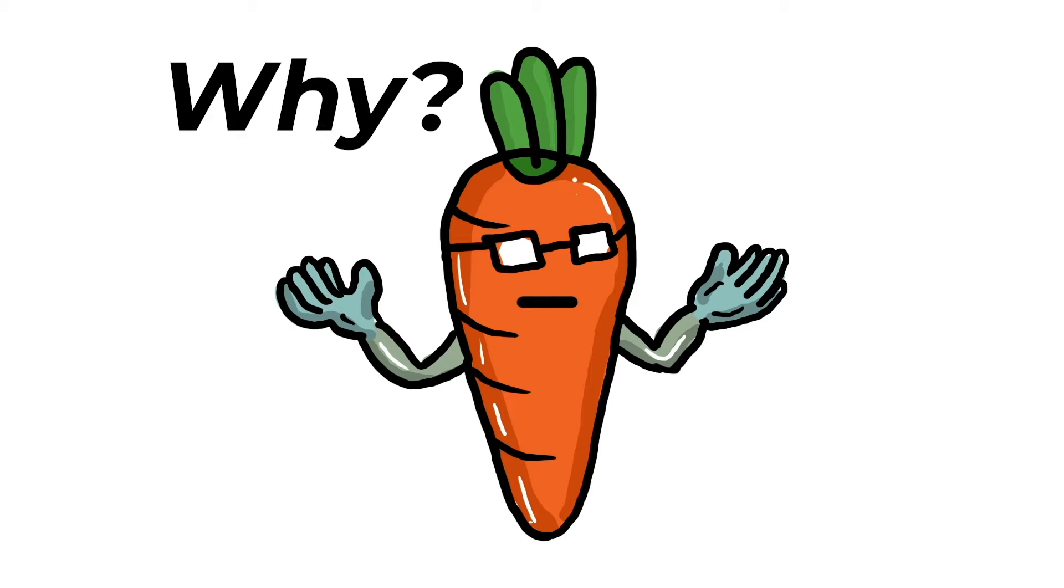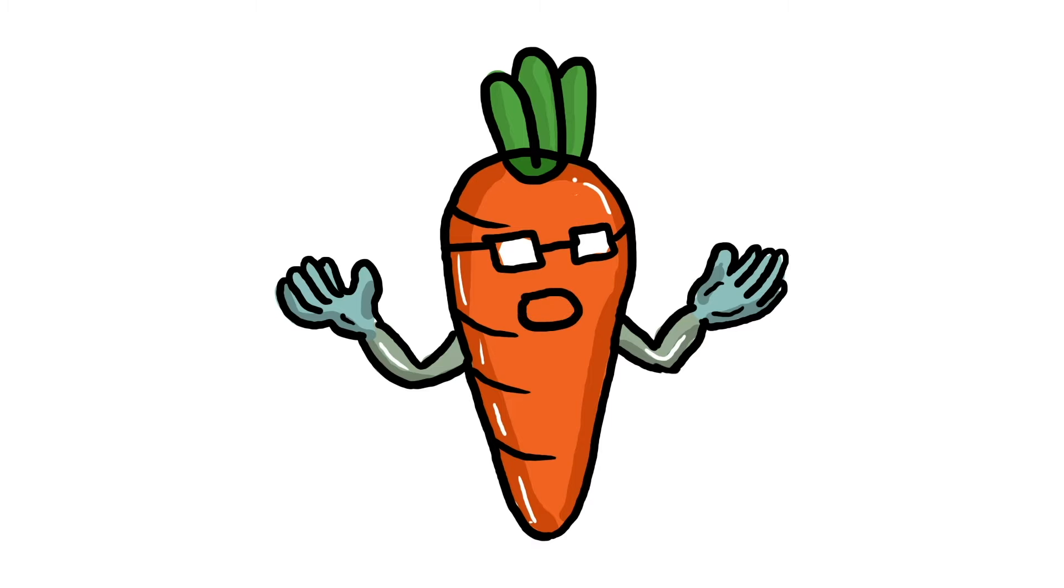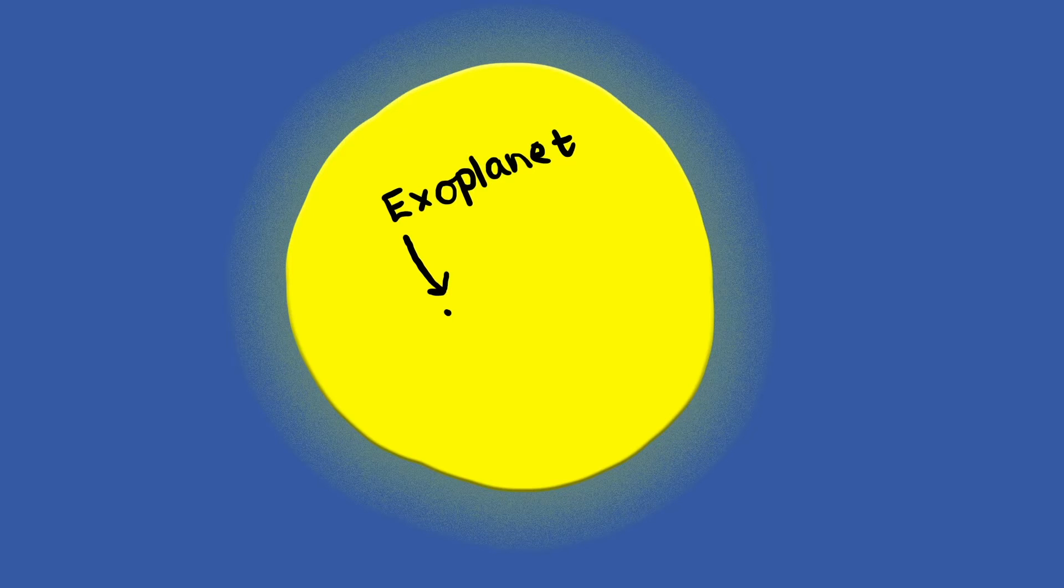Why, you ask? Well, these planets are really far away. But the main reason it's so hard to find them is because the stars they orbit are far too bright and cause a lot of glare.